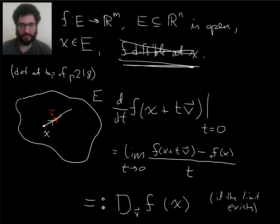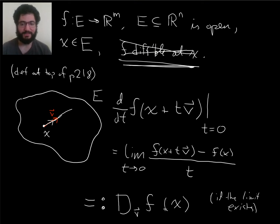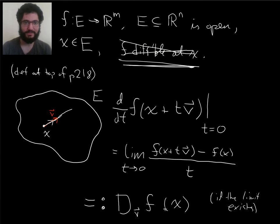We will soon see that if I bring in the assumption that f is differentiable at x, then it follows by the chain rule that this limit exists and you can talk about this directional derivative. So this is the definition of the directional derivative of f at x in the v direction — starting at x and looking along a line that travels along velocity vector v. Now I want to relate this to the total derivative of f.